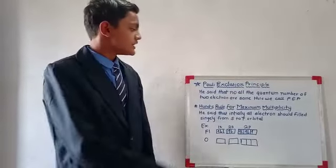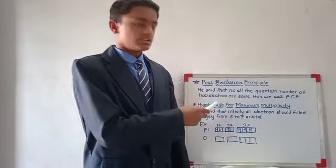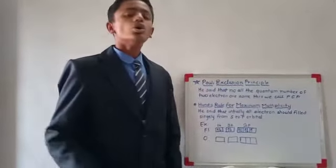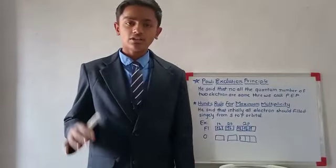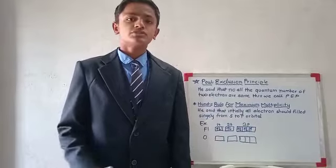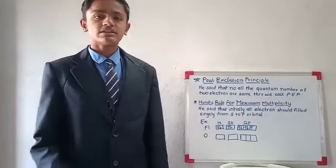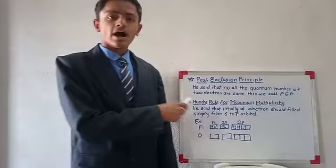So first, what is meant by Pauli Exclusion Principle? This principle states that no two electrons have the same quantum numbers. This we call the Pauli Exclusion Principle—meaning no two electrons have the same quantum numbers.